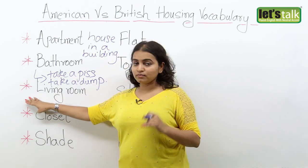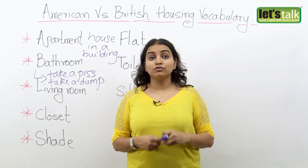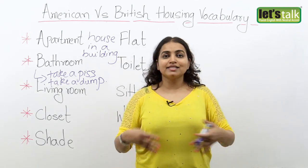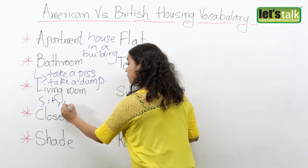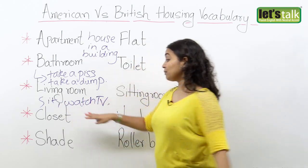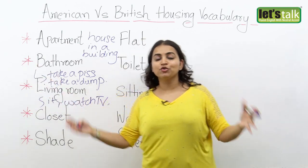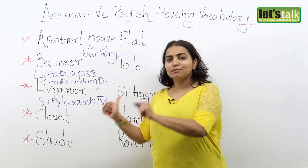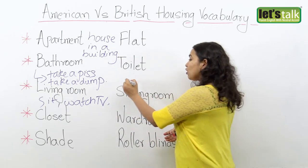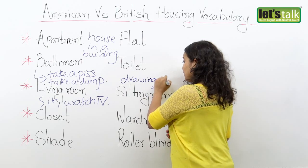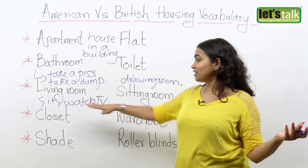Our next room is the living room in America. The first room you enter when you come into someone's house is a place where you sit and do things like watch TV, and it's also where you entertain visitors or guests. That is called the living room in the US. But the same room in England or the UK would be called a sitting room, or a lot of people call it the drawing room. So in the UK it could be called the sitting room or the drawing room, while in the US it is called a living room.